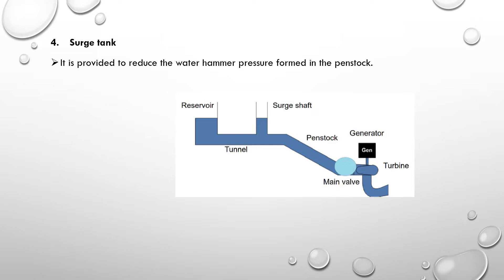The valve is closed. The water returns. There is a pressure difference — this is called water hammer. If we reduce the tank, it is provided to reduce the water hammer pressure formed in the penstock. The water hammer is reduced by the surge tank.